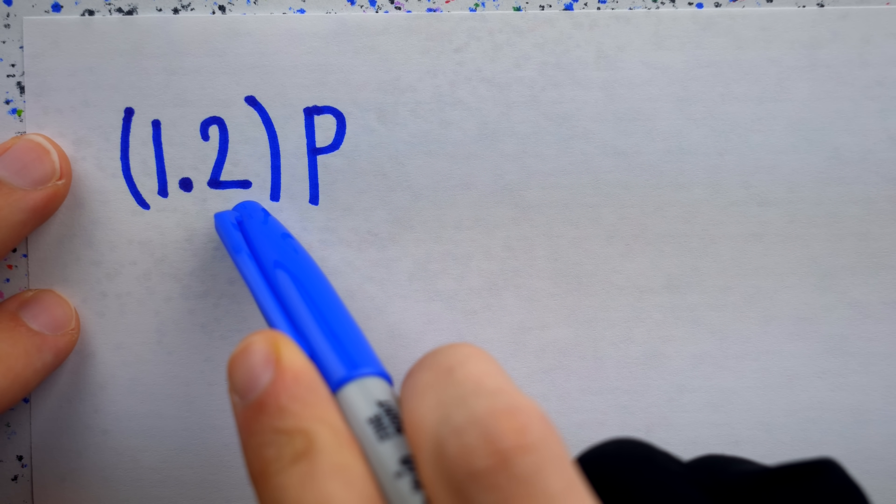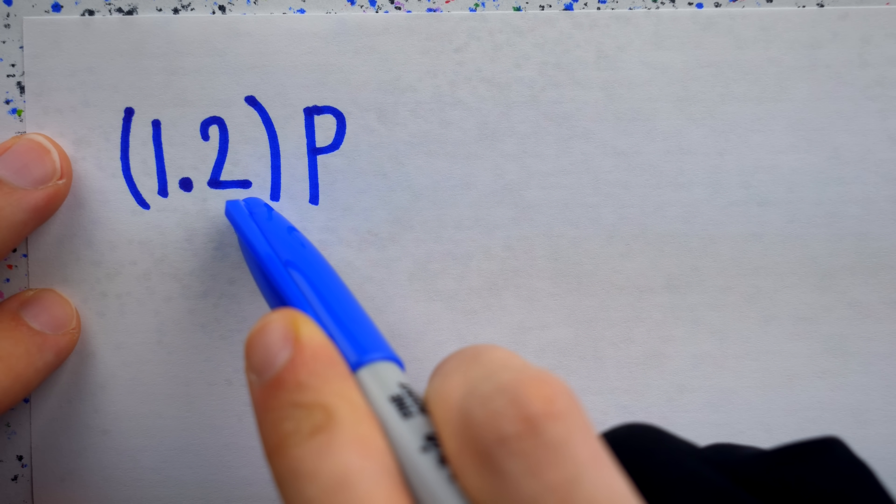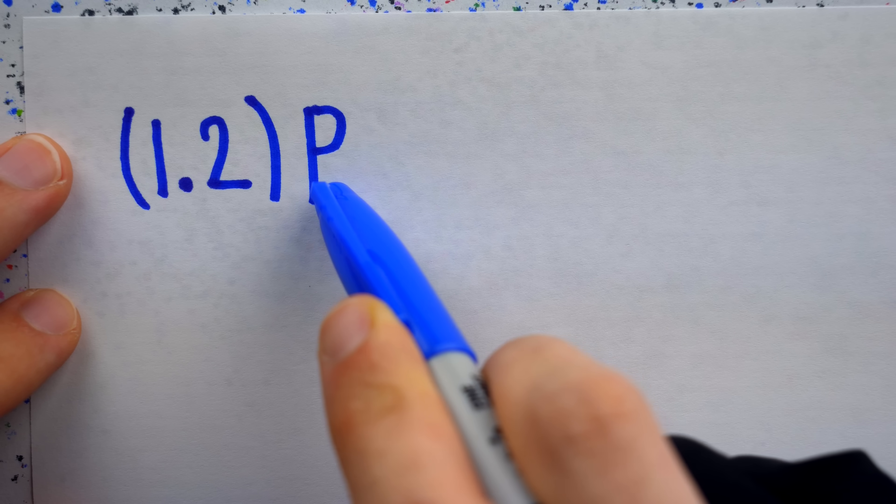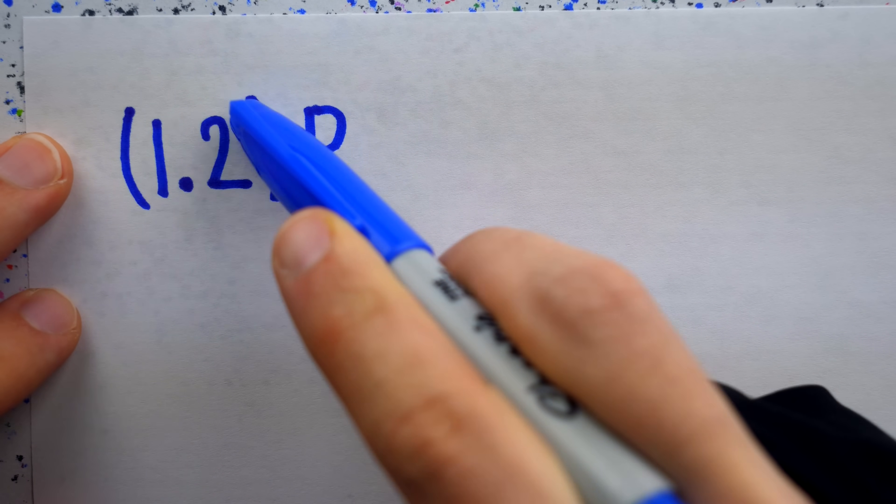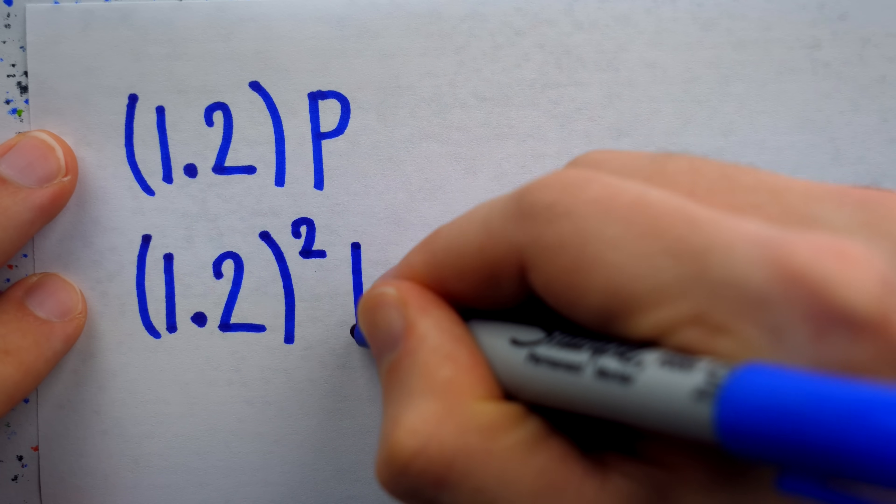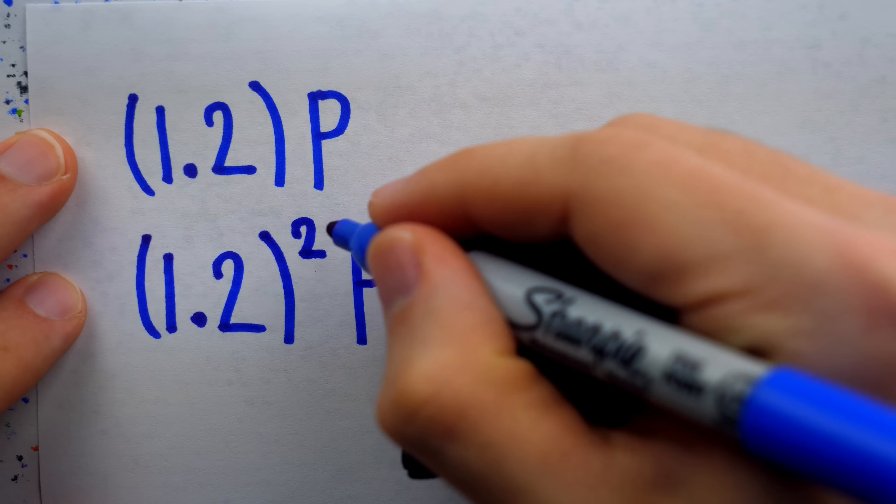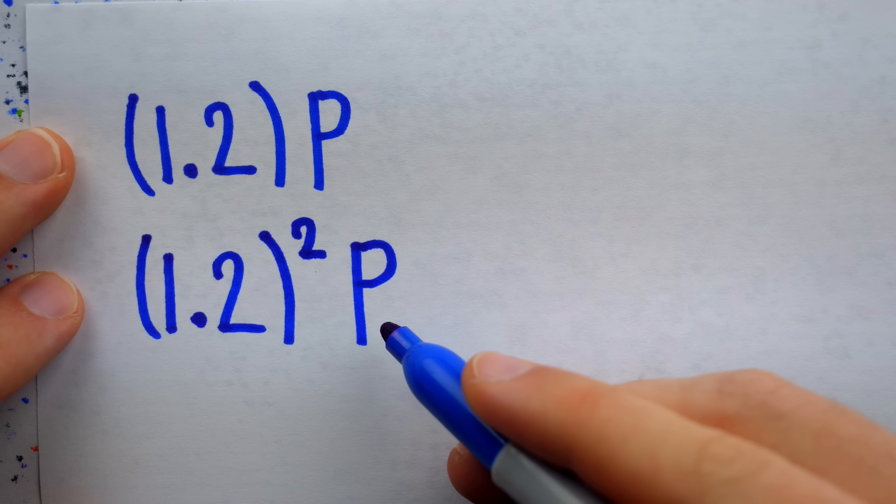Remember that 0.2 is 2 tenths, or 20%, so this gives us 1, the whole amount p, plus that 20% interest. After two years have passed, the sum will have grown to 1.2 to the power of 2 times p.